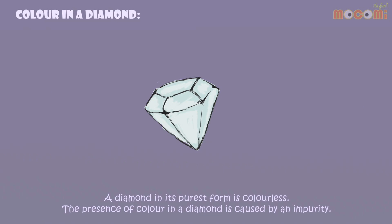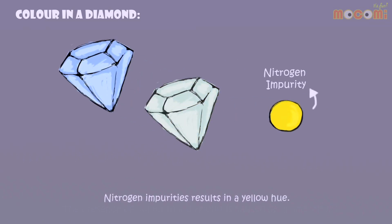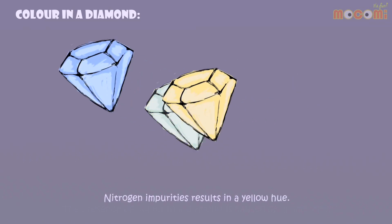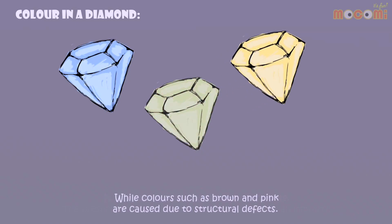A diamond in its purest form is colourless. The presence of colour in a diamond is caused by an impurity. Boron turns the diamond blue. Nitrogen impurities result in a yellow hue. While colours such as brown and pink are caused due to structural defects.